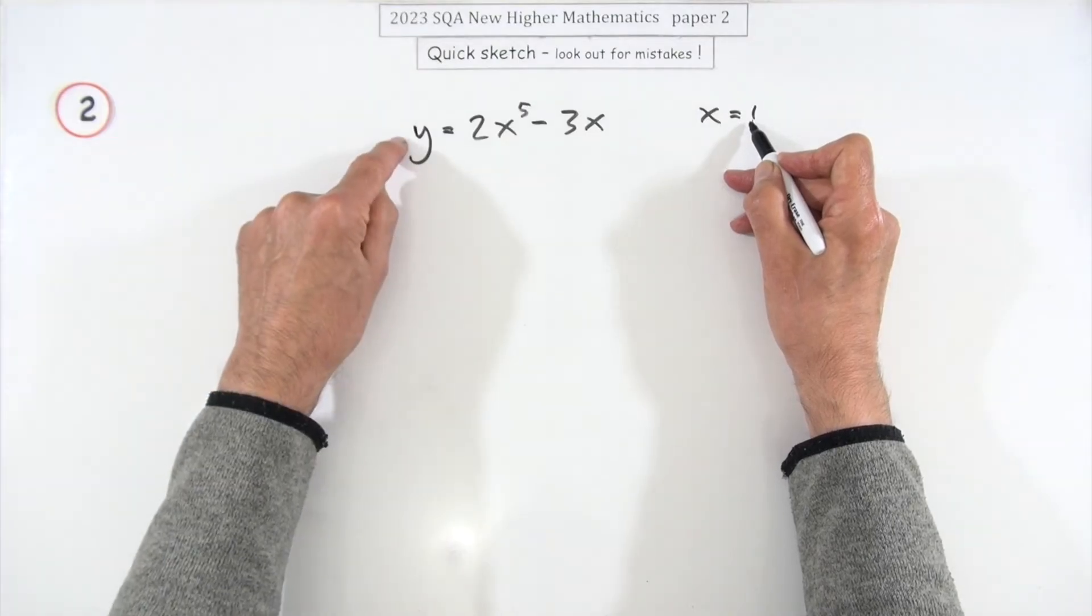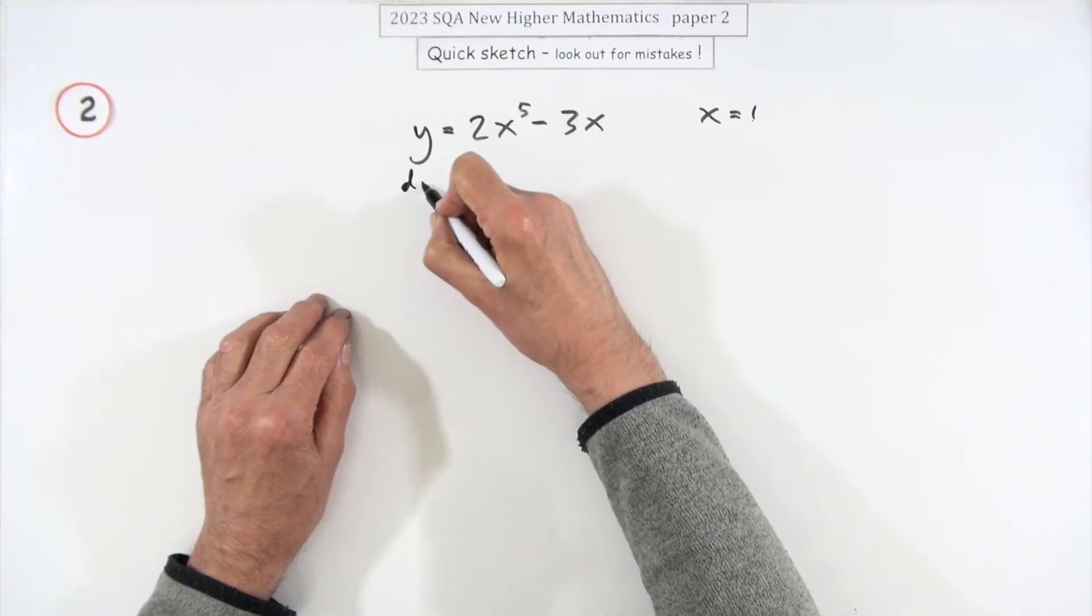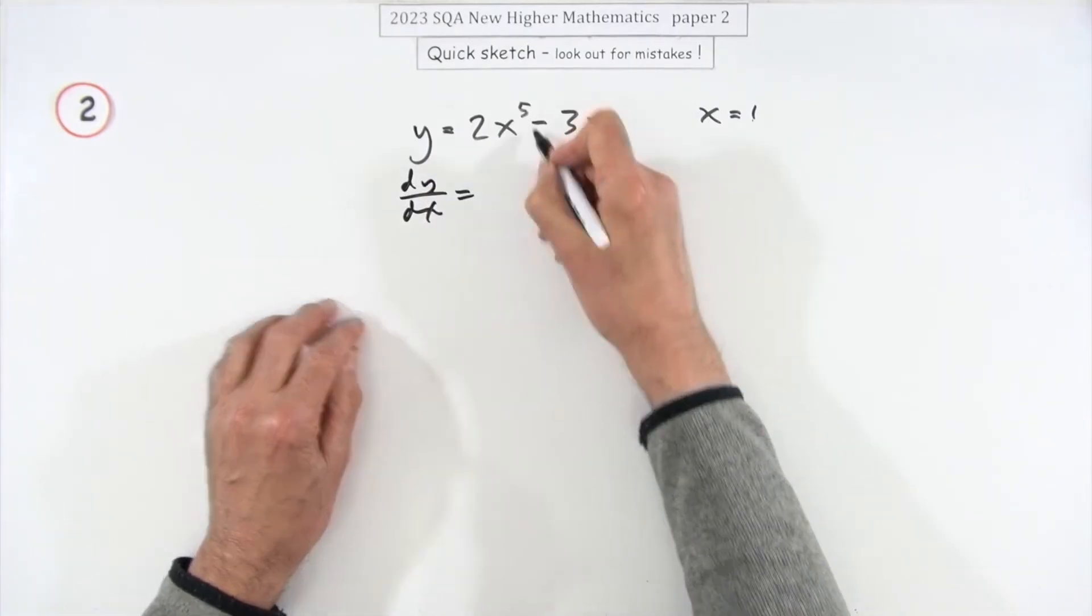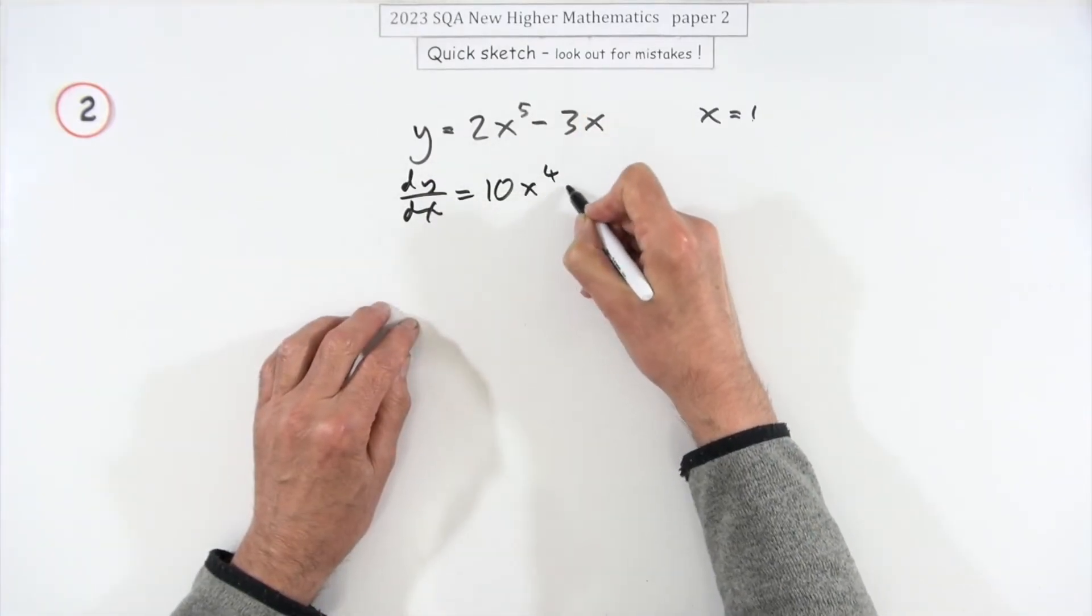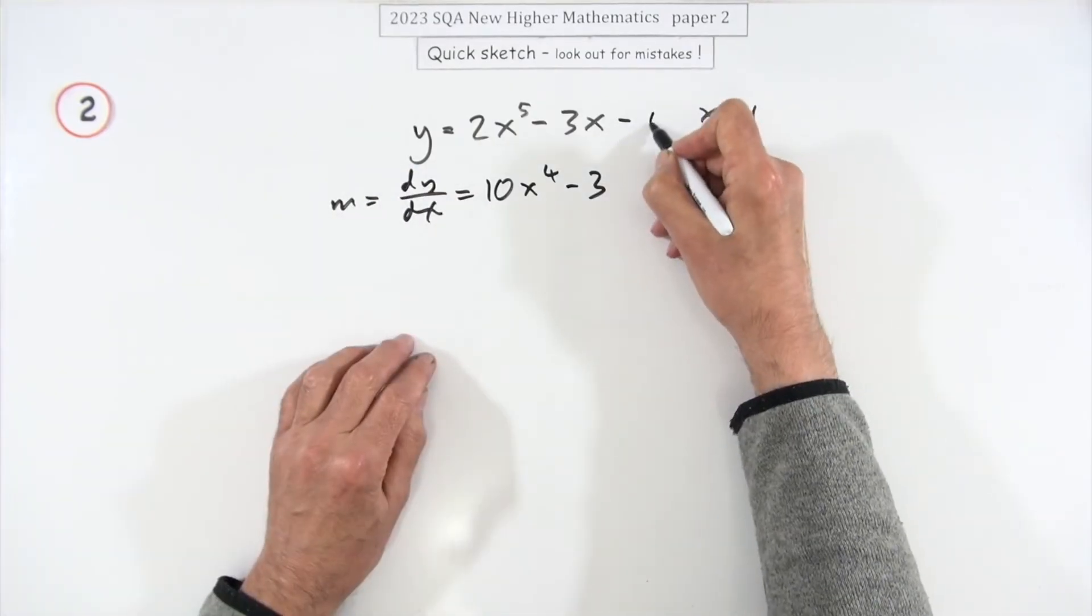So to get the equation of a tangent, that's a line. You need a point on it. Well, there's the x coordinate and there's the coordinate equation, so I'll give you the y coordinate. You need the gradient, differentiate it. That'll be 10x to the 4 minus 3, giving the gradient.